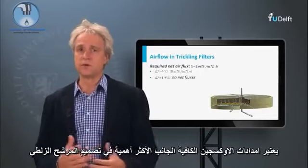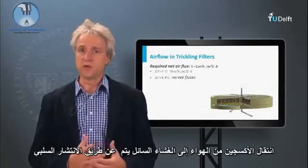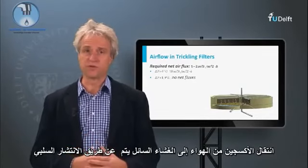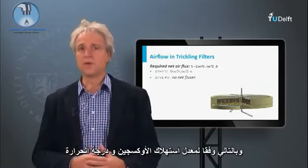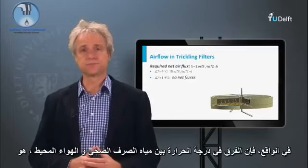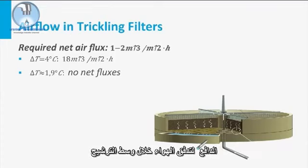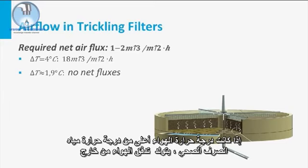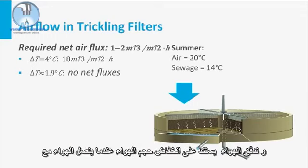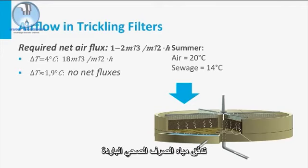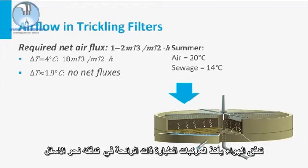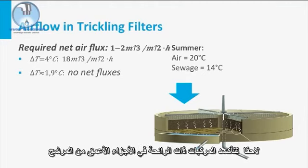Adequate oxygen supply is considered the most important aspect of a trickling filter design for sewage treatment. The transport of oxygen from the air to the liquid film is driven by passive diffusion, thus by the oxygen consumption rate and the temperature. In fact, the temperature difference between the sewage and the surrounding air is the driver for convective airflow through the filter bed. If the air temperature is higher than the sewage temperature, then an airflow from outside the filter to inside the filter bed is created. This airflow is based on the decreasing air volume when the air comes into contact with the cold sewage flow. The airflow takes possible odorous volatile compounds in its downward flow, and these odorous compounds are subsequently oxidized in the deeper parts of the bed.